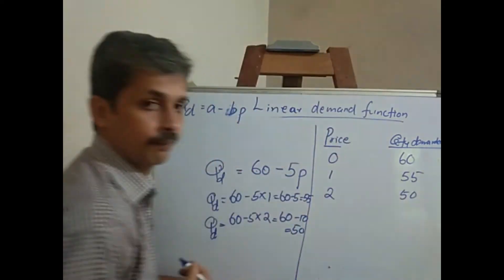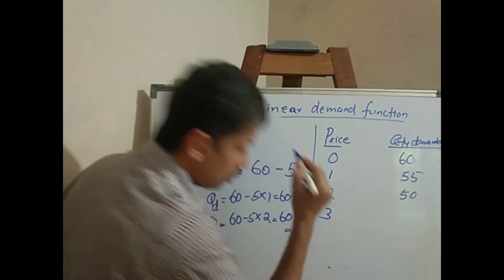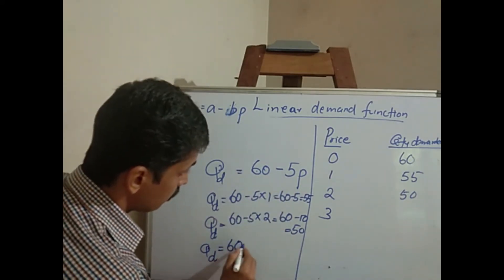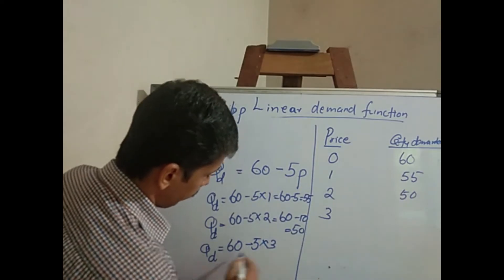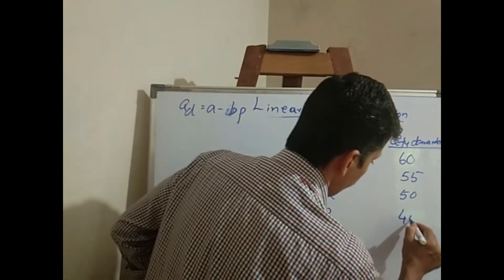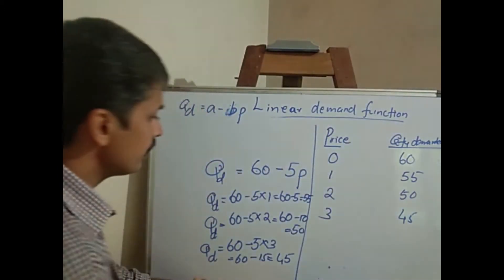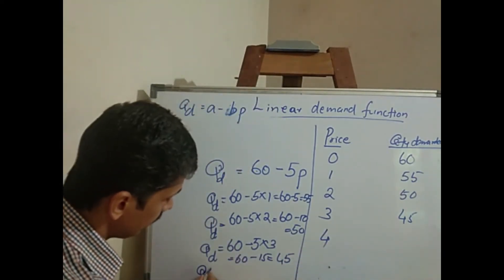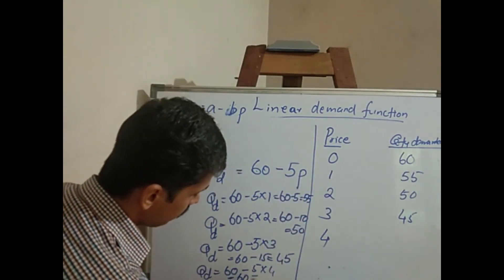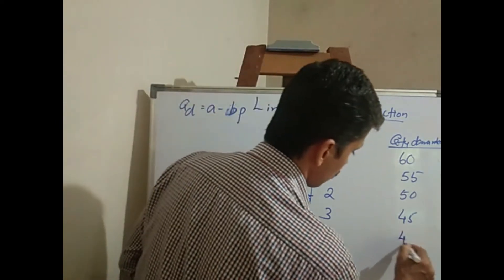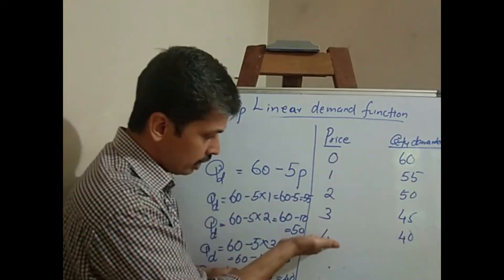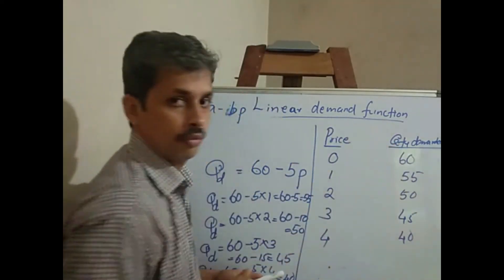When the price increases to 3, substitute: Qd is equal to 60 minus 5 into 3, that is 60 minus 15, that is 45. When price increases to 4, Qd is equal to 60 minus 5 into 4, that is 60 minus 20, that is 40. So from the demand schedule, when price increases the quantity demanded falls.